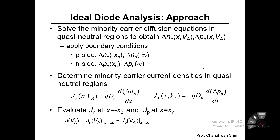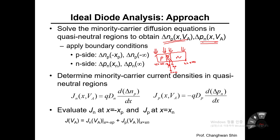For the n-side, two boundary conditions are needed: at x = xn (the depletion edge in the n-side) and at the far right edge of the pn diode. The depletion layer is in the middle between -xp and xn, with the metallurgical junction at the origin. These boundary conditions are required to complete the solution form for delta n sub p and delta p sub n.